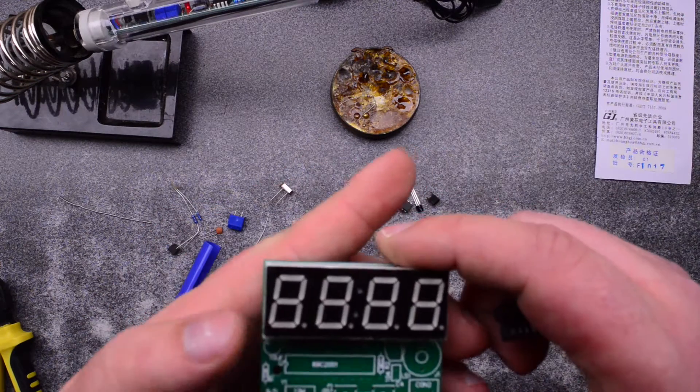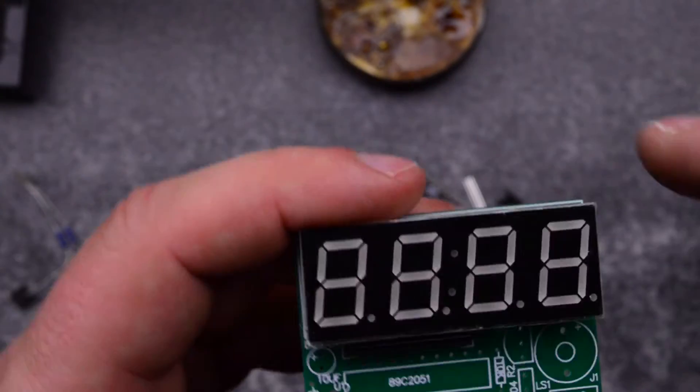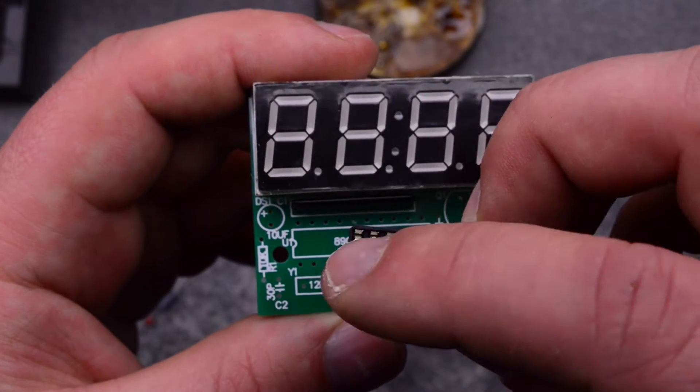So as I mentioned it goes as a puzzle. I will continue with installing the IC socket. Little divot right here. Corresponding divot on the socket.